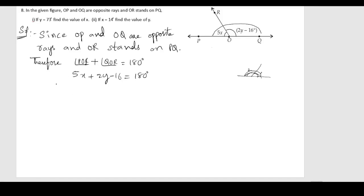Simplifying, we send 16 to the other side: 5x plus 2y equals 180 plus 16, so 5x plus 2y equals 196. This is our first equation.